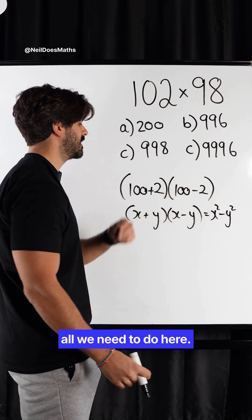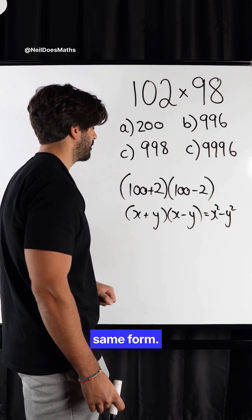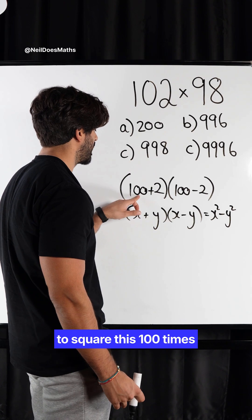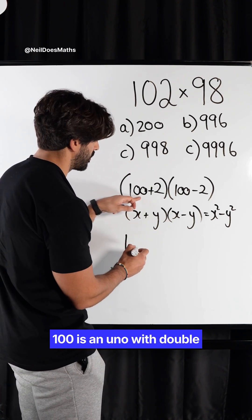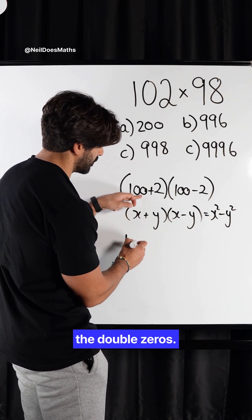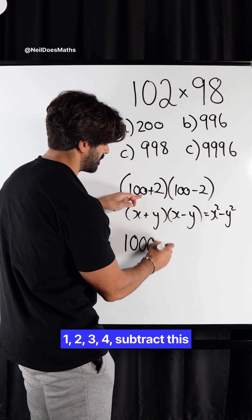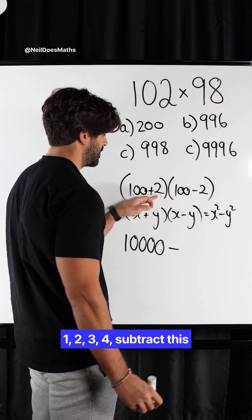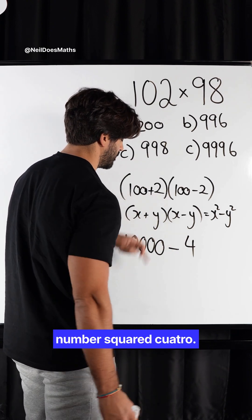And that's all we need to do here. So this is the exact same form, so we just need to square this — 100 times 100 is a 1 with four zeros: 10,000 — then subtract this number squared, which is 4.